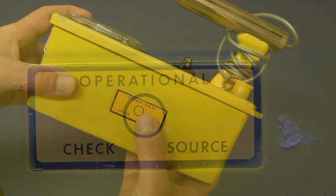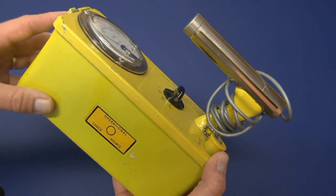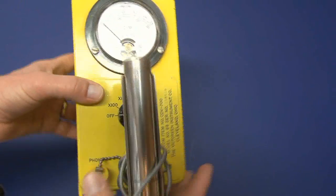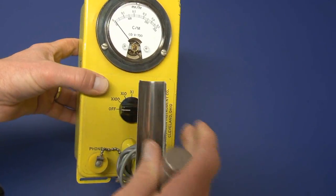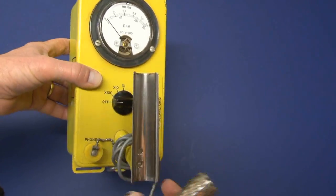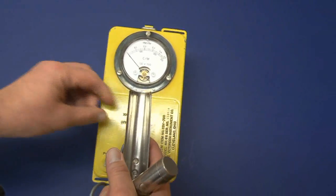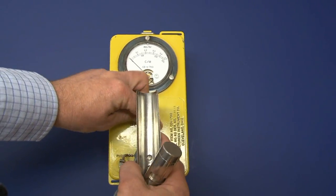These were either radium 226 or depleted uranium. In the case of this model 6B it's depleted uranium. Depleted uranium has a half-life of four and a half billion years, so even though this is an old survey instrument our source strength hasn't decayed off much.